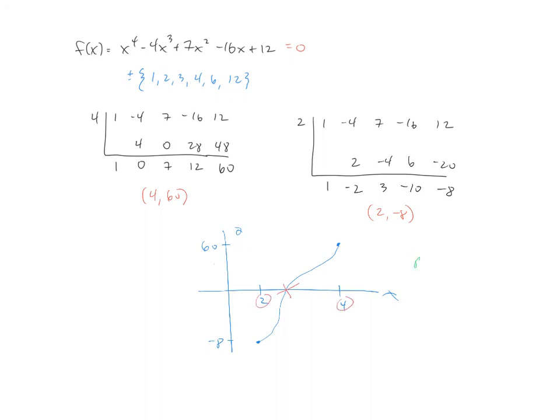So by the intermediate value theorem, my next guess would be to try x equals 3. So I would take 3, run my synthetic division, and hope for the best.